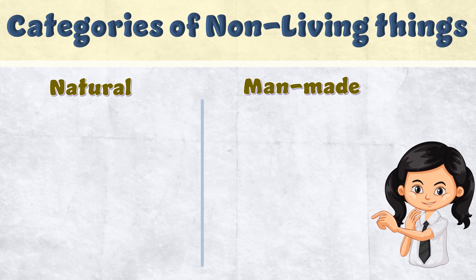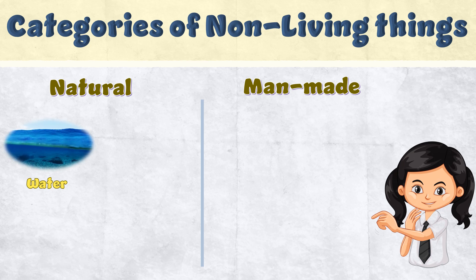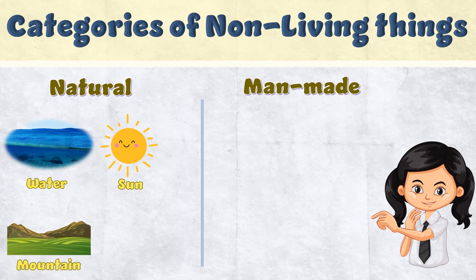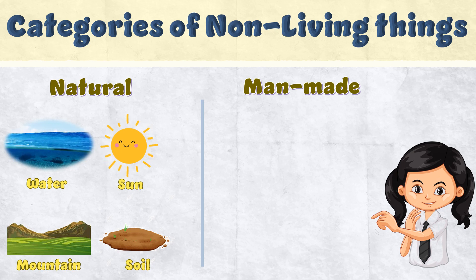Let's see some examples. We all know that water is natural, but it is a non-living thing. Same way, our sun, mountain, and soil. Water, sun, mountain, soil —